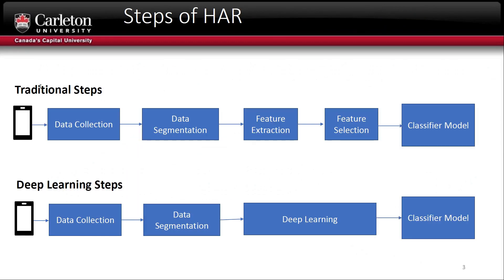There are two ways to build such systems. The traditional way is collecting the data, then segmenting it into windows. For each segment, features are extracted, then a feature selection algorithm retrieves the most significant features, followed by a classification method for building the classifier. The problem with this approach is that we need to choose the best feature selection algorithm that matches the classification algorithm. The newer way is using deep learning methods, where feature selection and extraction are embedded inside the deep learning algorithm.